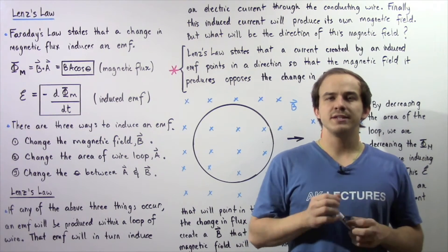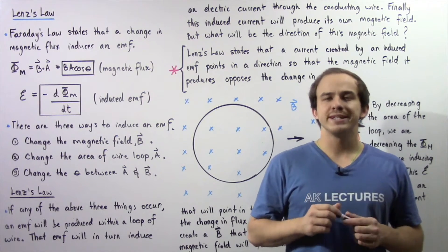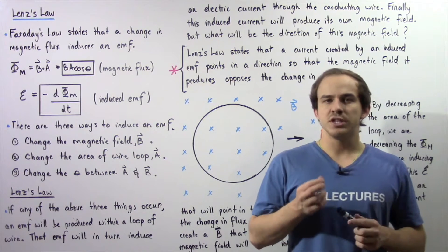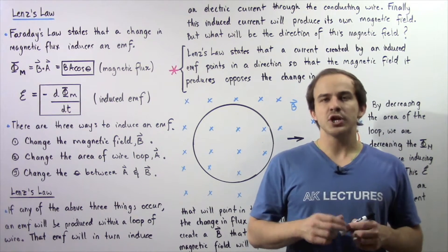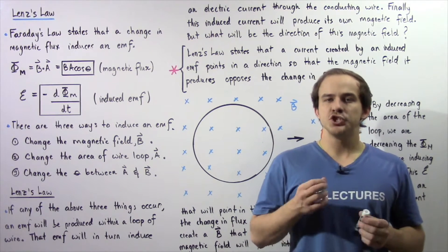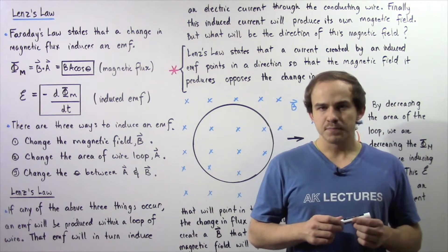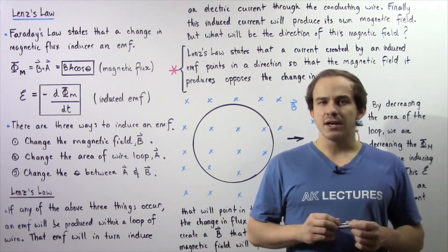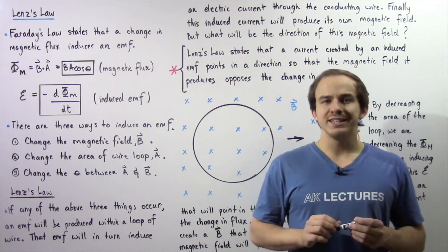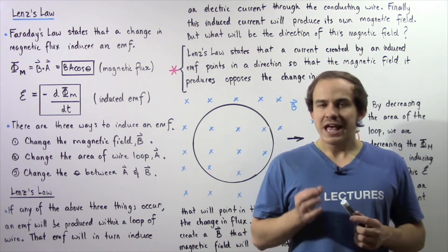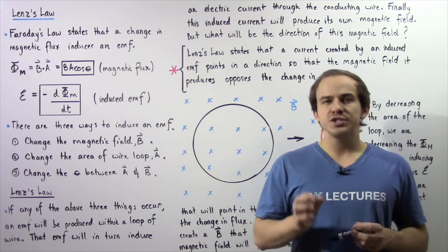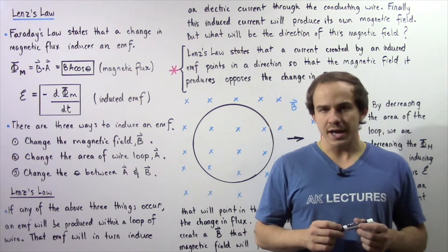In the previous several lectures, we discussed the concept of electromagnetic induction. Electromagnetic induction is essentially the process by which an EMF is induced within a conducting wire as a result of a change in magnetic field. We also discussed a law known as Faraday's Law. Faraday's Law of Electromagnetic Induction tells us that a change in magnetic flux will induce an EMF within a conducting wire.